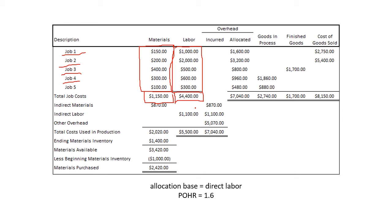According to our problem, our allocation base is direct labor, and our predetermined overhead rate (POHR) is 1.6. Meaning whatever our direct labor is, we multiply it by 1.6 to allocate overhead — as discussed in the previous video. So for Job 1, direct labor is $1,000, so $1,000 × 1.6 = $1,600. For Job 5, $300 × 1.6 = $480, and so forth. These are all the direct costs we can associate with the jobs, including our allocated overhead.